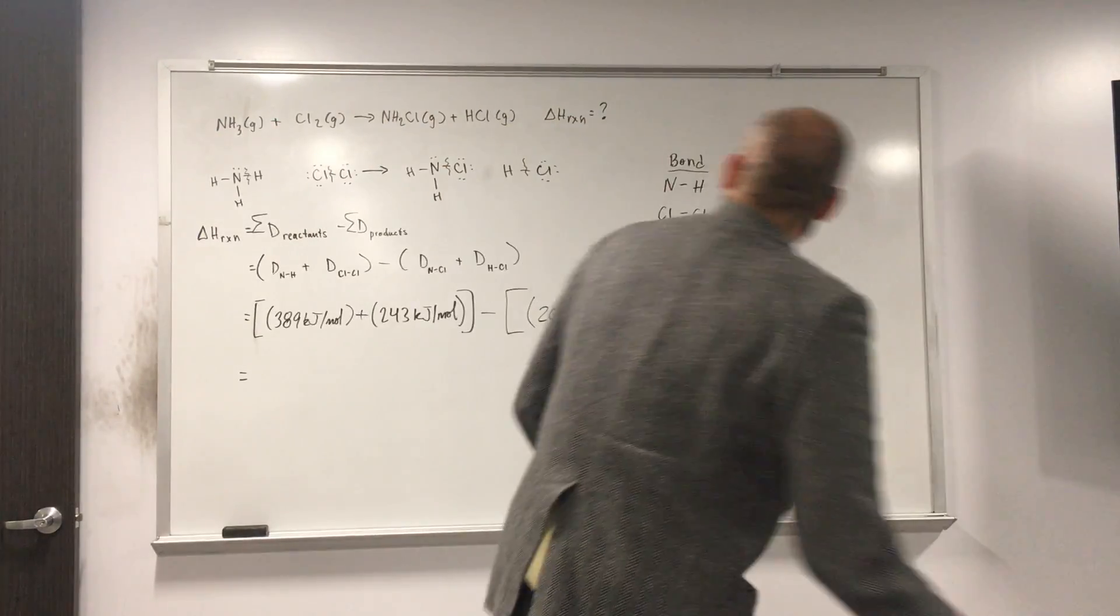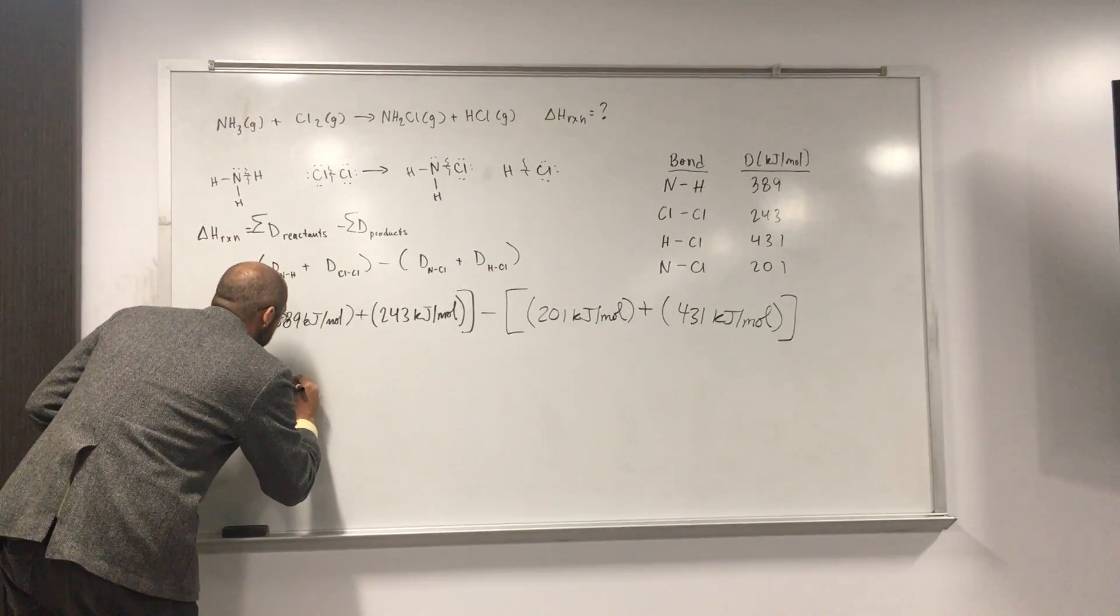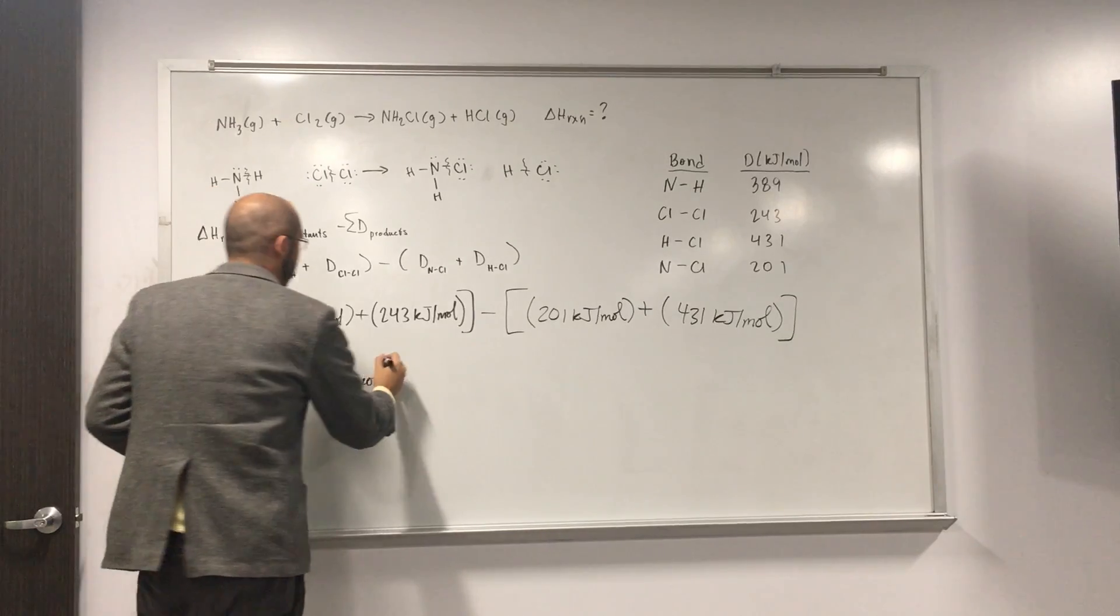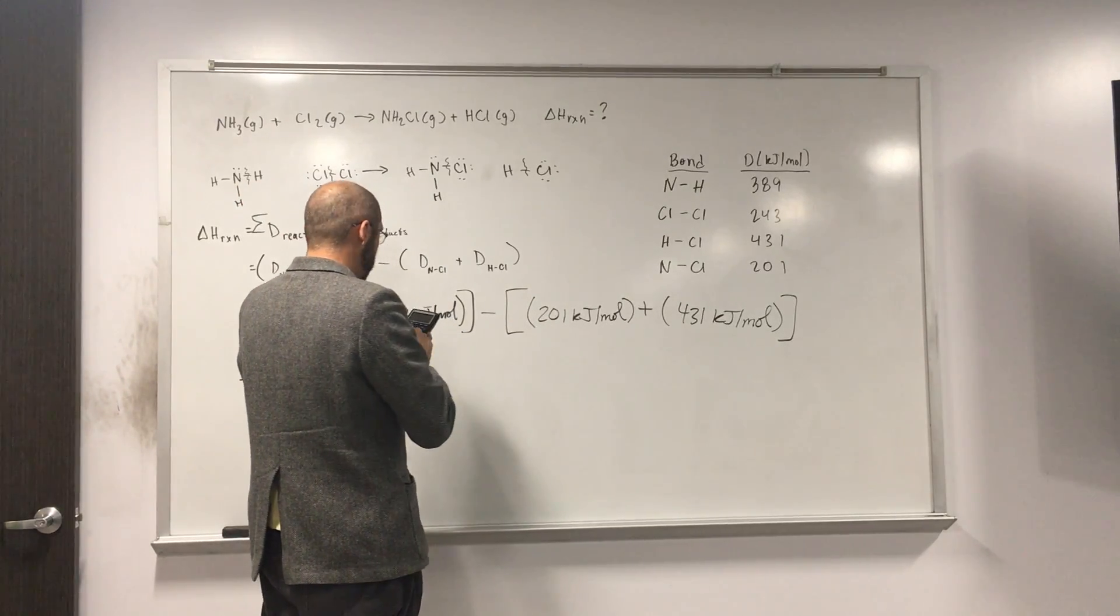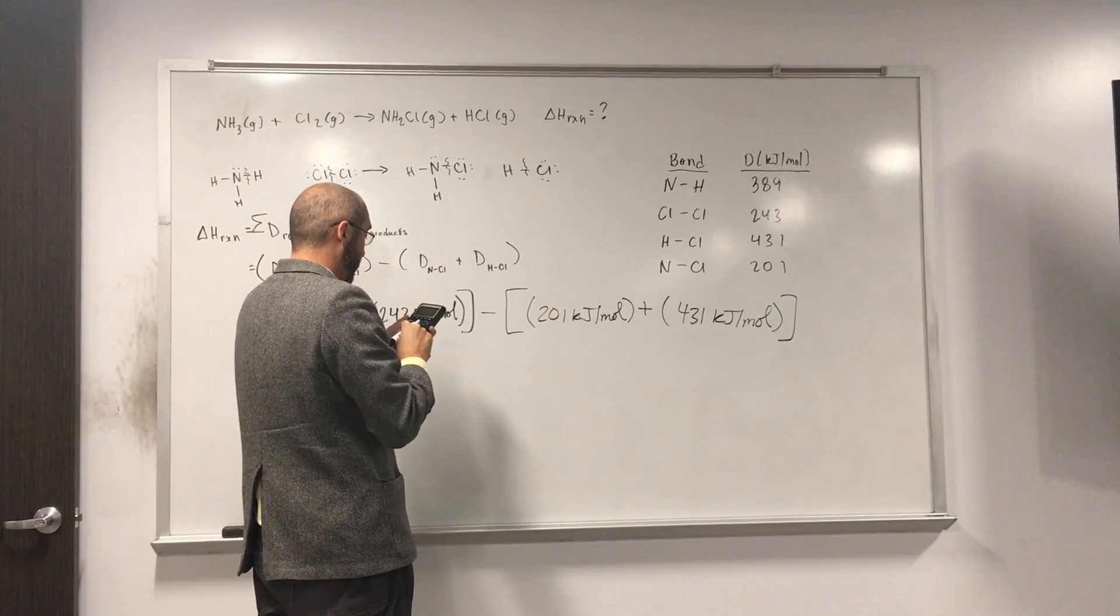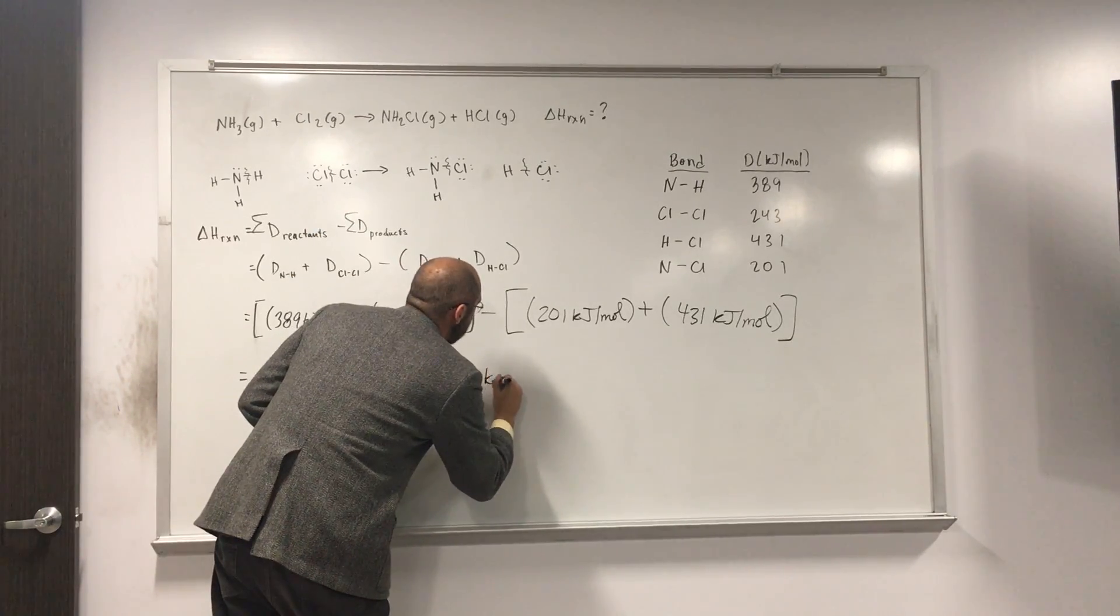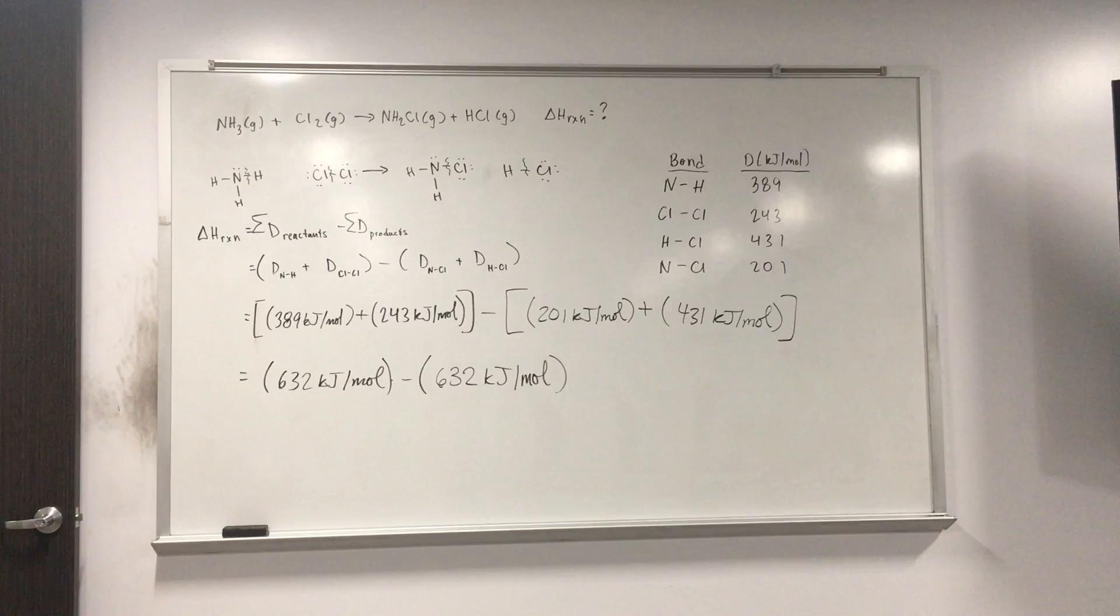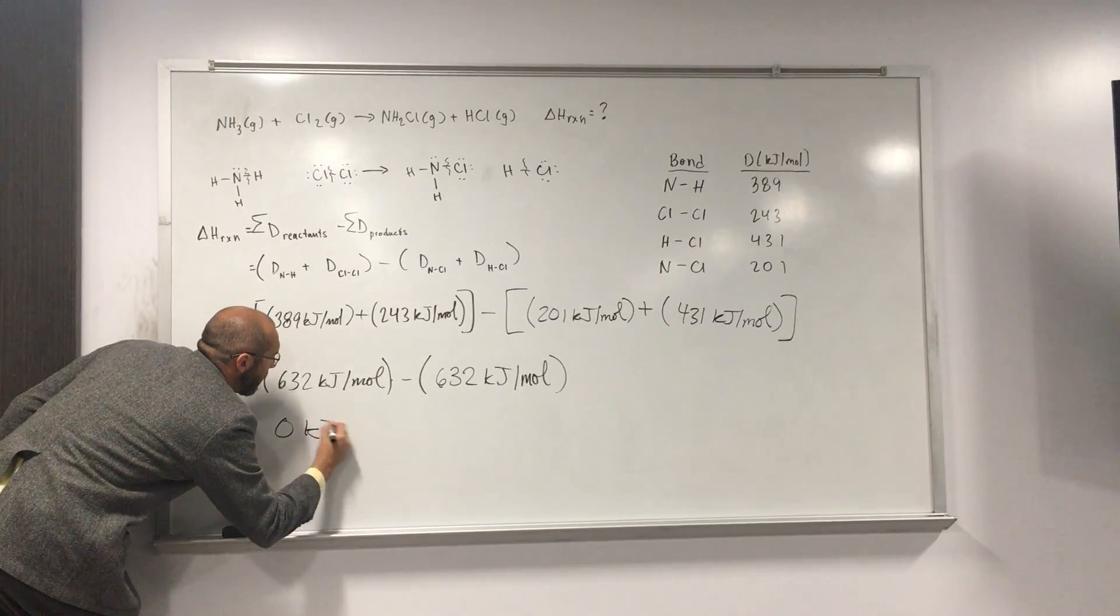And then just get out of here. Calculator. 389 plus 243. 632 kilojoules per mole. And we're going to subtract that. This other number from it. So 201 plus 431. And this one's turning out to be, I guess, interesting. Maybe not so interesting. So we get the same number for both of these. So the delta H of this reaction is going to be what? Zero. So not too interesting, I guess.